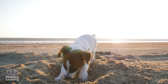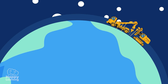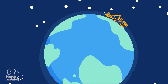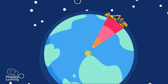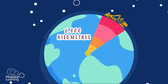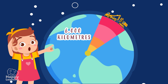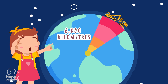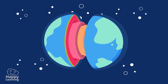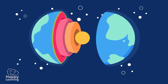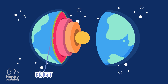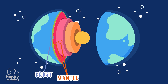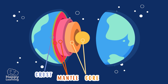Did you know that if we were to drill a hole to the very centre of the earth, we would have to dig more than 6,000 kilometres deep? It's incredible — it would be immense! The geosphere is made up of three concentric layers called the crust, the mantle, and the core. Let's get to know them.